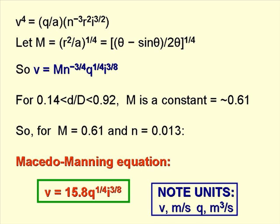Macedo then defined M equal to (R squared over A) to the power 1/4, so that V equals M times N to the minus 3/4, times Q to the 1/4, times I to the 3/8. For values of d/D between 0.14 and 0.92, M is essentially constant with a value of about 0.61. Using this value for M and N equals 0.013, we get the Macedo-Manning equation: V equals 15.8 times Q to the power 1/4 times I to the power 3/8, where V is in metres per second and Q is in cubic metres per second.